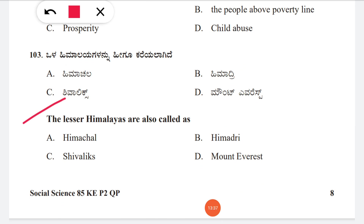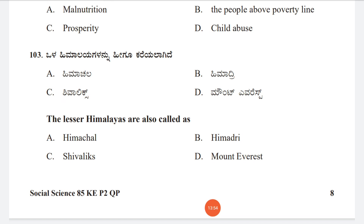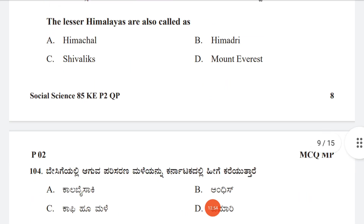Question 103: The Lesser Himalayas are also called as — option A: Himachal, B: Himadri, C: Shivaliks, D: Mount Everest. The correct answer is A, Himachal. The Lesser Himalayas are called Himachal.